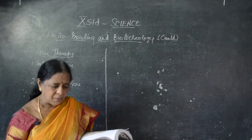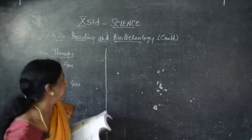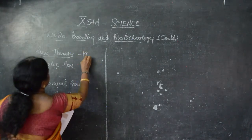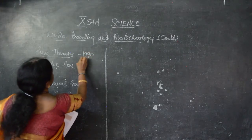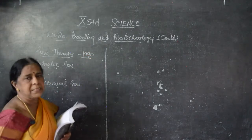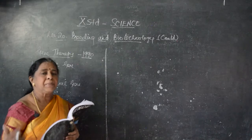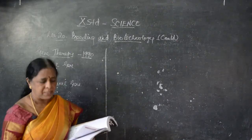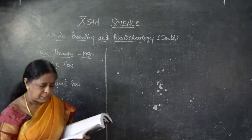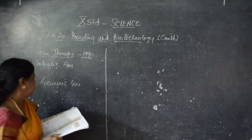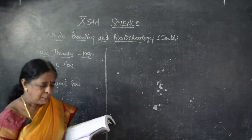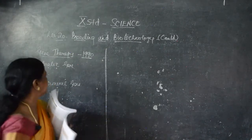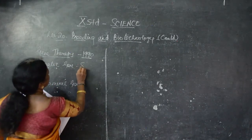This technology was successfully implemented in 1990, and gene therapy was introduced in 1991. After that, the lifespan of human beings increased — lifespan means the living period. There are two kinds of gene therapy: one is somatic and the other is germline gene therapy.